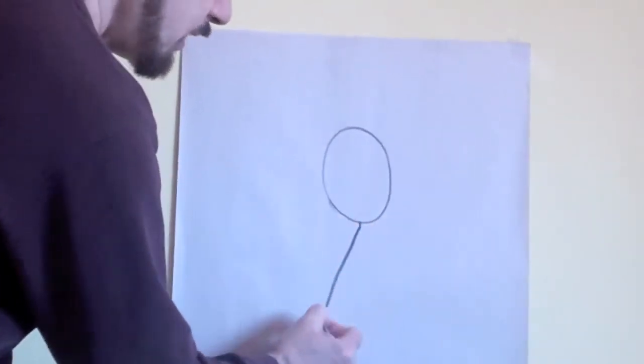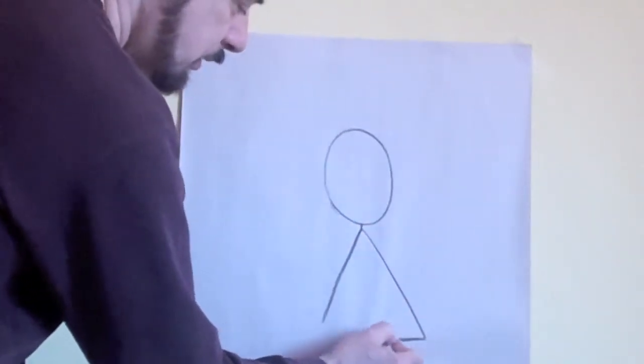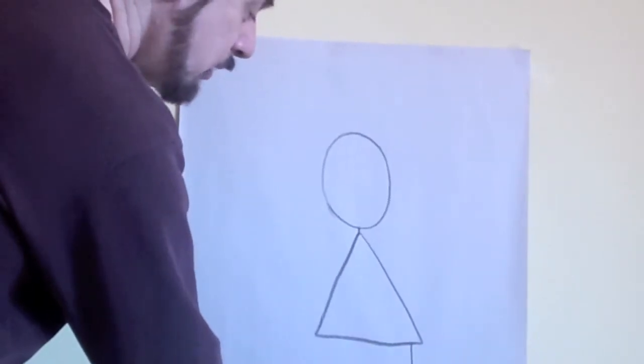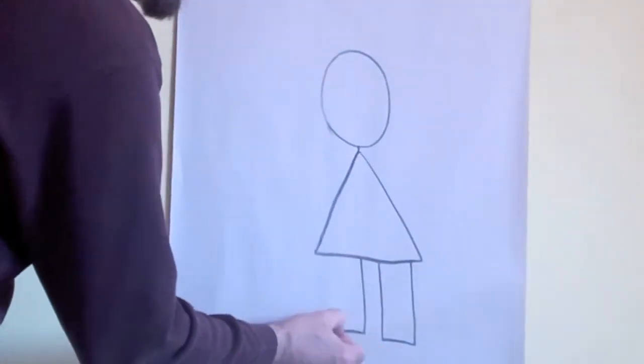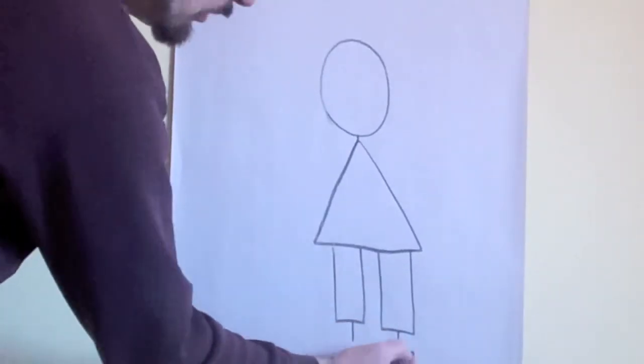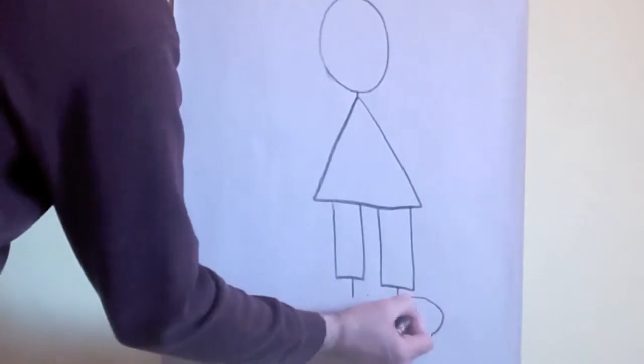Her shirt is a triangle, just like FLIP. All of my characters are made with shapes so that they'd be easy for you to draw. Her pants are rectangles. She has little ankles, which are lines. Her sneakers are ovals.